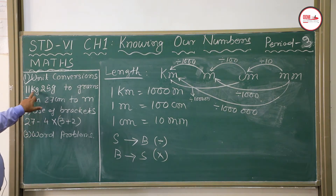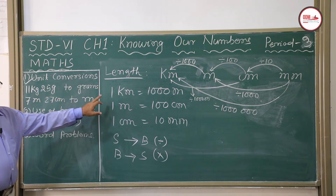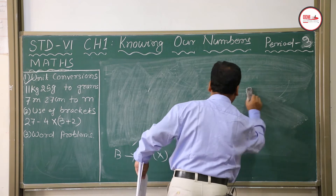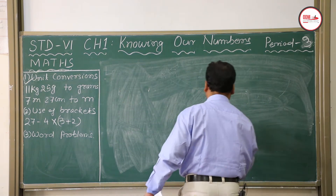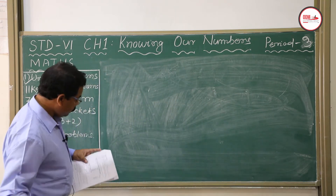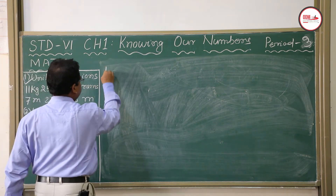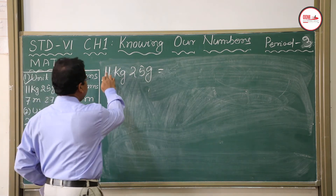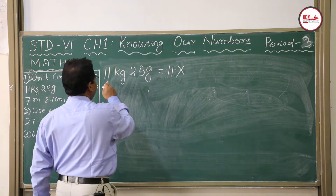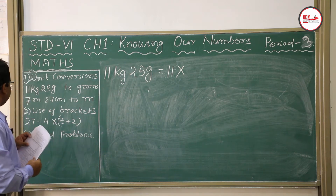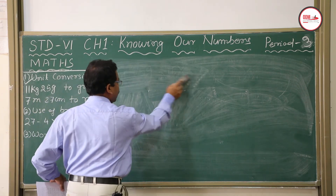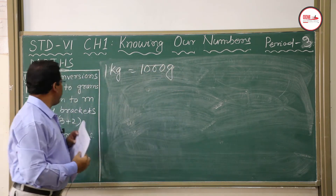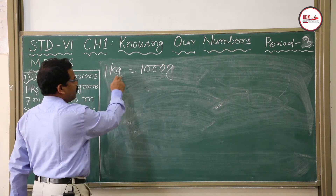Now we will discuss how to convert 11 kg 25 grams to grams. Before solving, you must know that 1 kilogram equals 1000 grams. If you want to convert kilogram to gram, multiply by 1000.